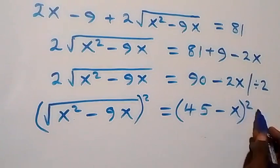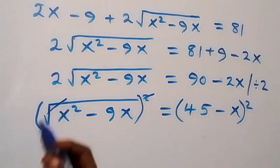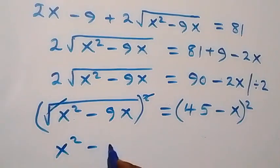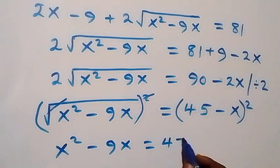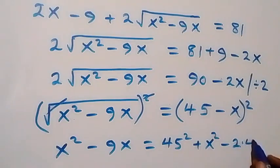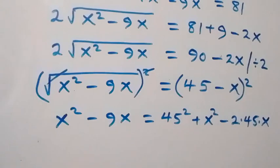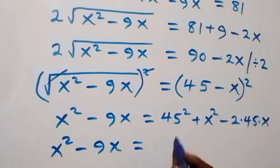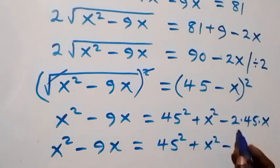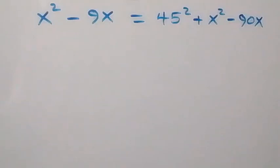When we square both sides, the square cancels the square root and we are left with x squared minus 9x equals 45 squared, then plus x squared, and this gives us minus 2 times 45 times x, that is minus 90x. So x squared minus 9x equals 45 squared plus x squared minus 90x.